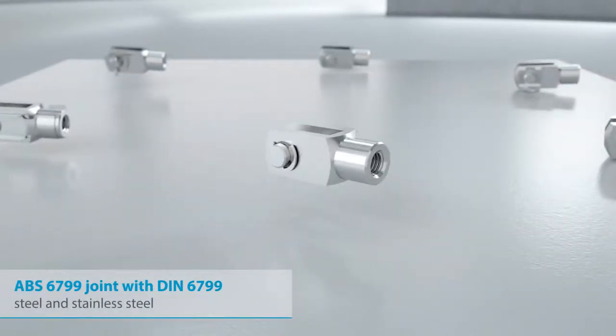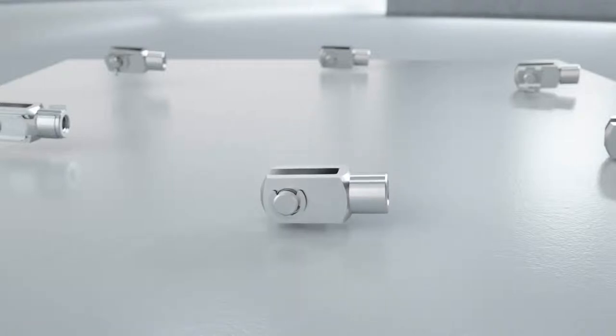Alternatively, a locking washer, in accordance with DIN 6799, can be used for fixing. The ABS 6799 joint is also available fully manufactured from stainless steel. This variant can be mounted with or without a tool.